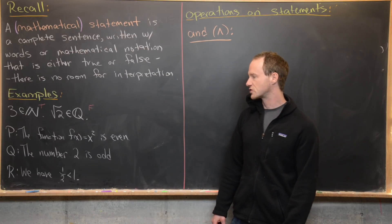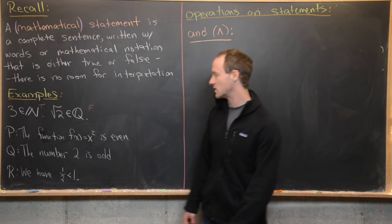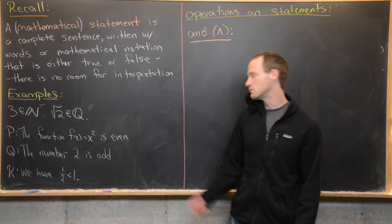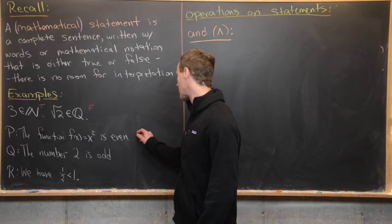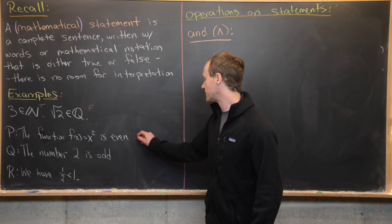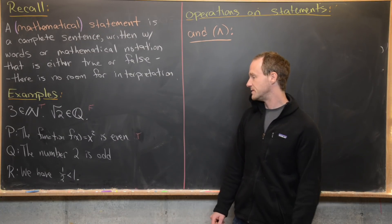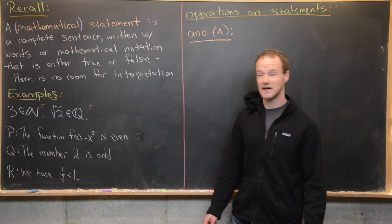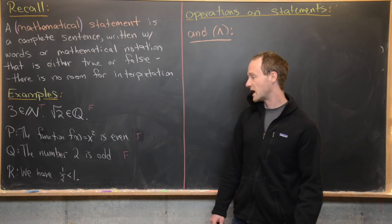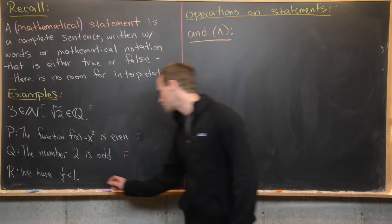In the last video we also described that sometimes we give mathematical statements names. The statement p is defined as 'the function f(x) = x² is even' — that's true, since any even polynomial is an even function. The statement q is 'the number two is odd' — that's false. And the statement r is 'one half is less than one' — that's true.